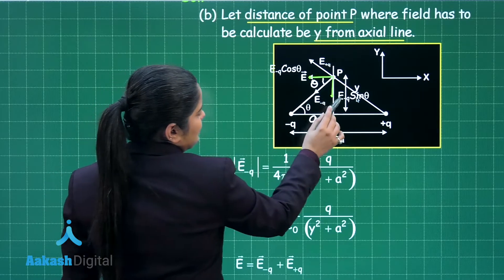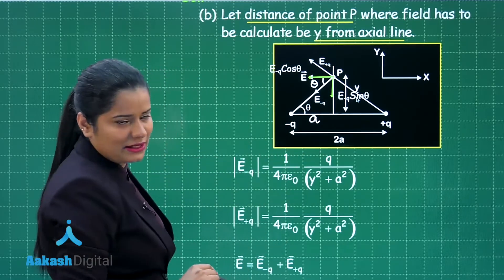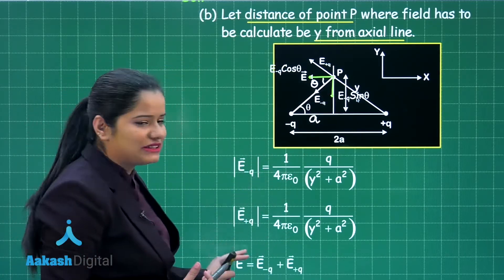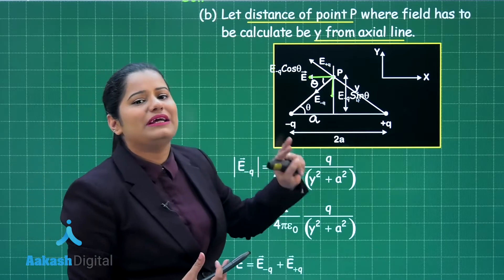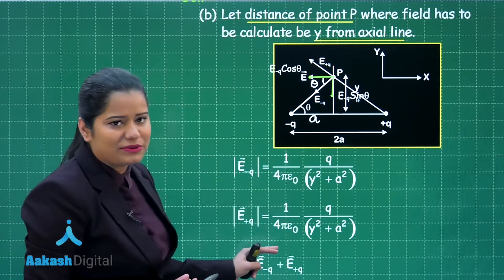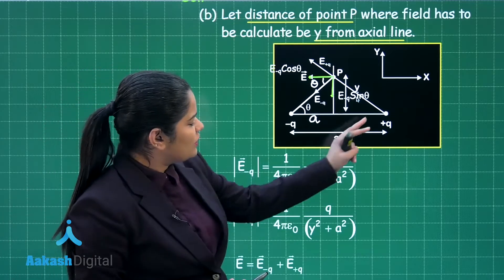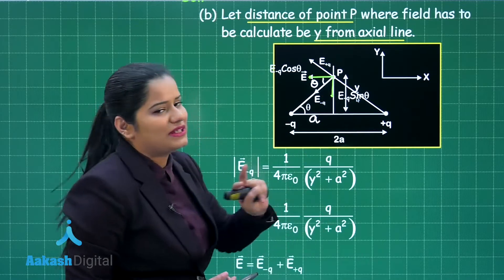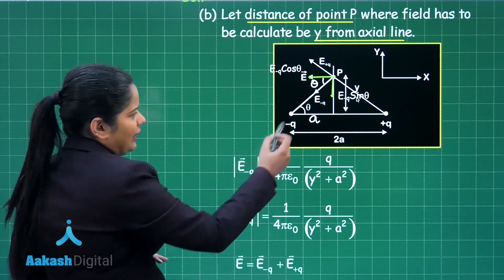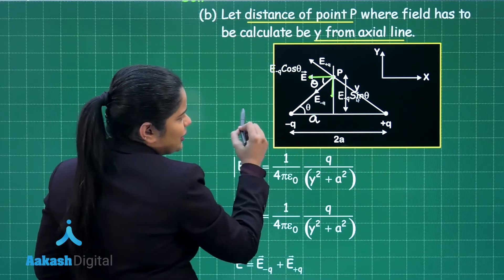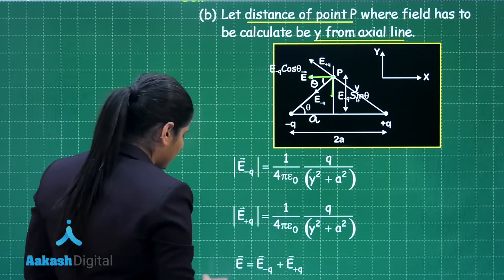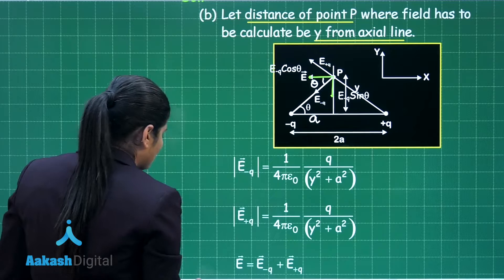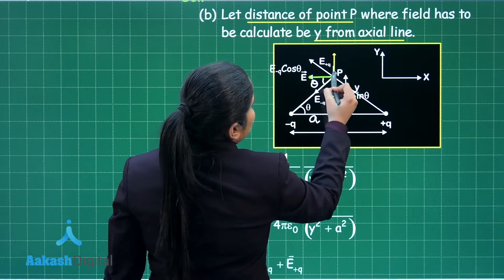Similarly, the electric field at point P due to the positive charge is again k·q / r², where k = 1/(4πε₀), the magnitude of the charge is q, and the distance is still √(a² + y²). The electric field due to the positive charge can also be resolved into two components, just as we did for E₋q.